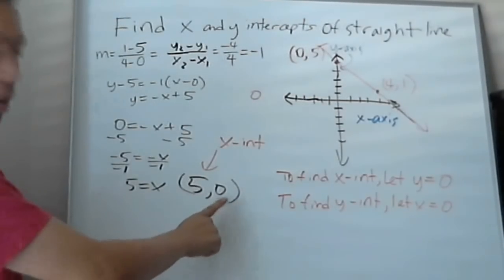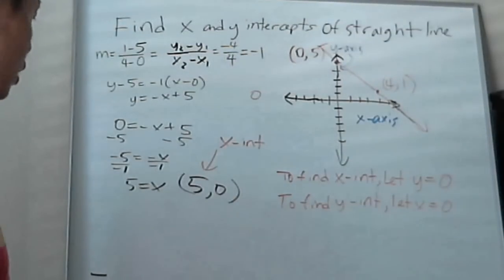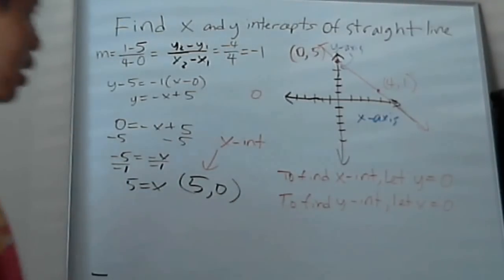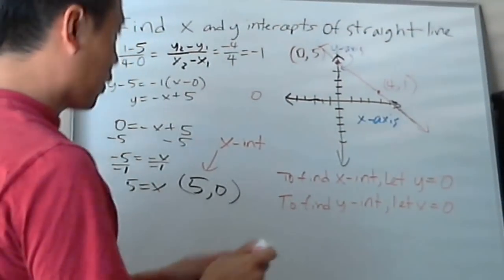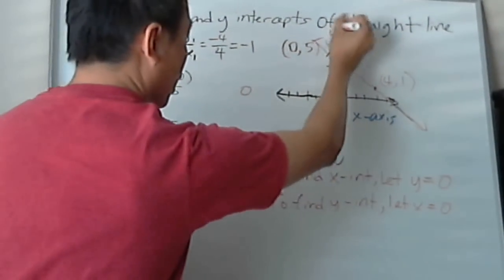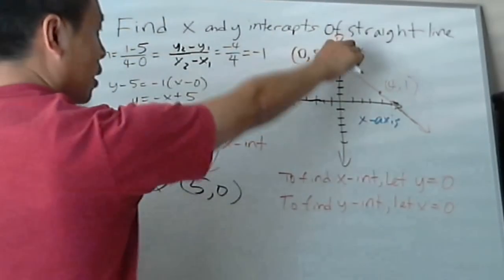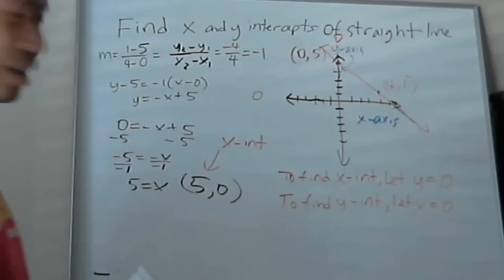Vice versa, how do you find the y-intercept? Well, if you're on the y-axis, it's the same thing. You have to let x equal to 0. See, when x is equal to 0, you're on the y-axis, right? So that's why you let it equal to 0.